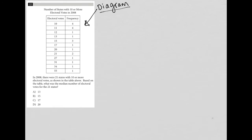This question is a diagram question, as indicated by the large table provided. Let's take a look at the table first, then dive into what we're being asked to find. The table shows the number of states with 10 or more electoral votes in 2008. The first column has the number of electoral votes between 10 and 55, and the second column shows the frequency — the number of states. For instance, there are four states with 10 electoral votes, one state with 17, and one with 34. Once you're satisfied that you understand how to read the table, and only then, go on to read the actual question itself.